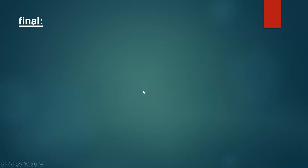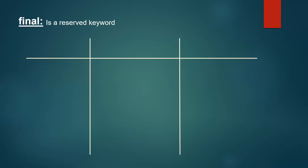Let us first understand what final is. Final is a reserved keyword, so we can't use it as an identifier. Final can be used before a variable, a method, and a class.